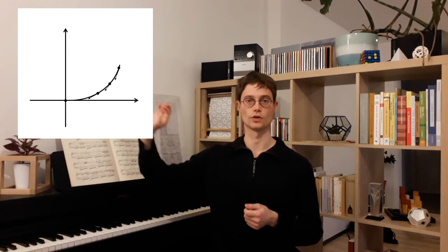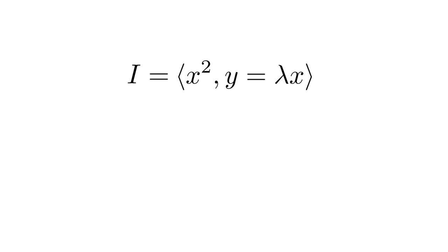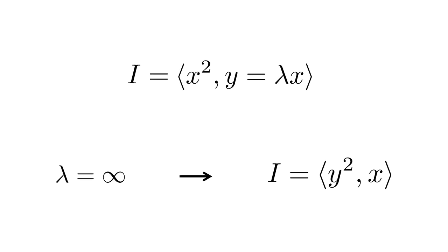As an example, consider the zero fiber of the two-point Hilbert scheme. In this case, all the ideals are generic and can be written as x² and y equals λx, for a parameter λ in CP¹, meaning it can take any value in C and even the value infinity, in which case we replace the ideal by ⟨y², x⟩. So the zero fiber of the two-point Hilbert scheme is nothing but CP¹. You can imagine two particles: one sitting at the origin, and another particle collapsing to the origin, with the zero fiber retaining as extra information the direction from which the second particle hits the first one.